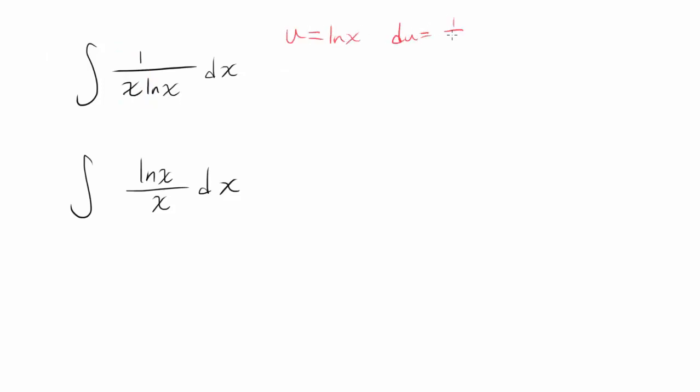So our du is going to be 1 over x dx and we have it right away. We have 1 over natural log of x becomes u and 1 over x dx becomes du.